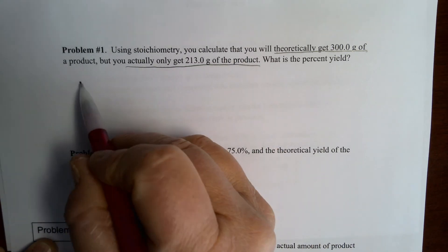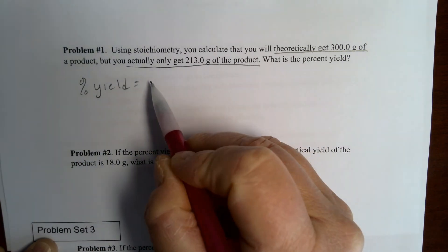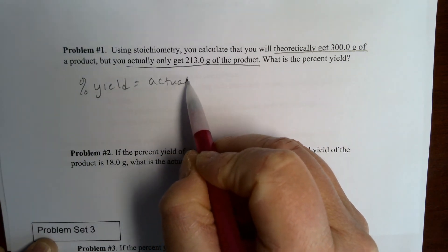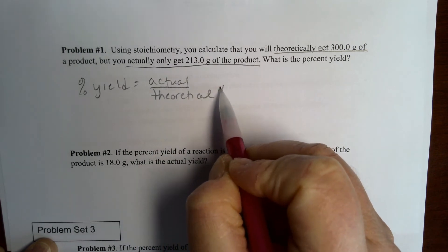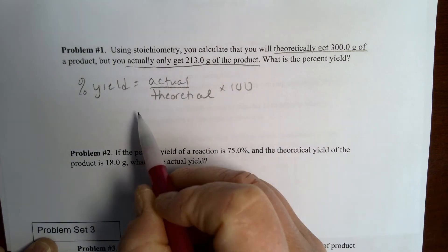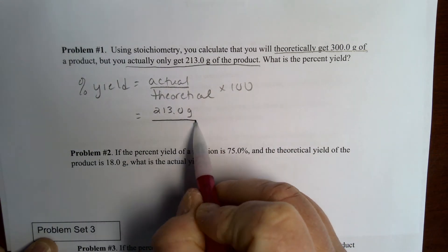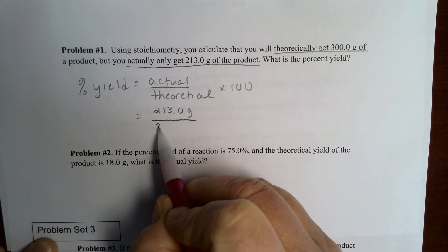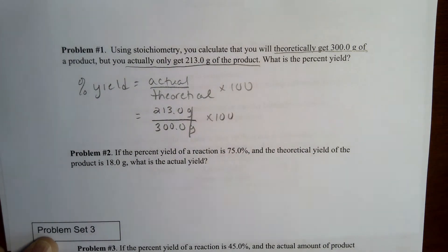So this is set up pretty straightforward. Percent yield is going to be your actual over your theoretical times 100. And so the actual here is 213.0 grams divided by the theoretical of 300.0 grams times 100. The grams are going to cancel.